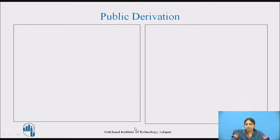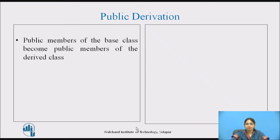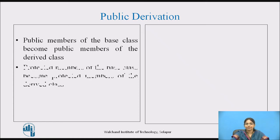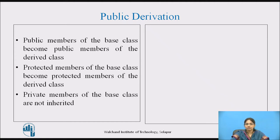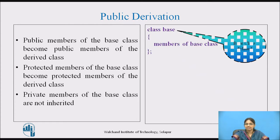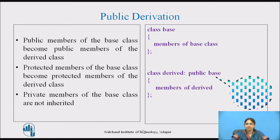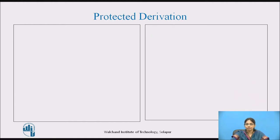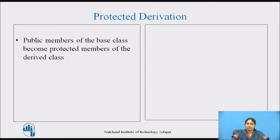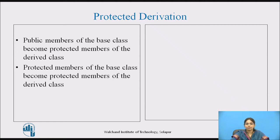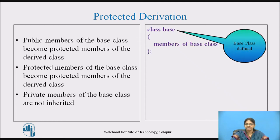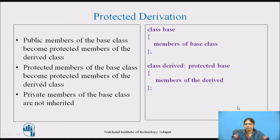Under public mode of derivation, public members of the base class become public members of the derived class, and protected members become protected members of the derived class; private members are not inherited. Under protected mode of derivation, public members of the base class become protected members of the derived class, and protected members remain protected; private members of the base class are not inherited.